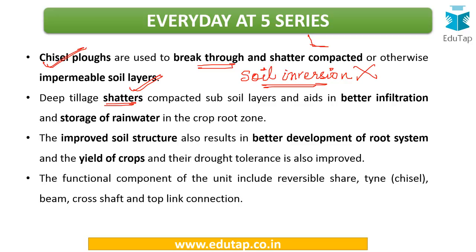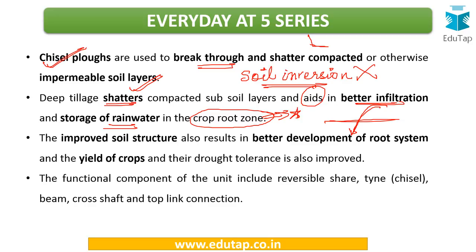Because of the chisel plough, there is better infiltration and storage of rainwater in the crop root zone. If the soil is very compact, water cannot pass through and does not reach the crop root zone, which is critical for crop development. Only when you break that impermeable layer does better infiltration occur. The functional components include a reversible share, tine, beam, cross shaft, and top link connection.